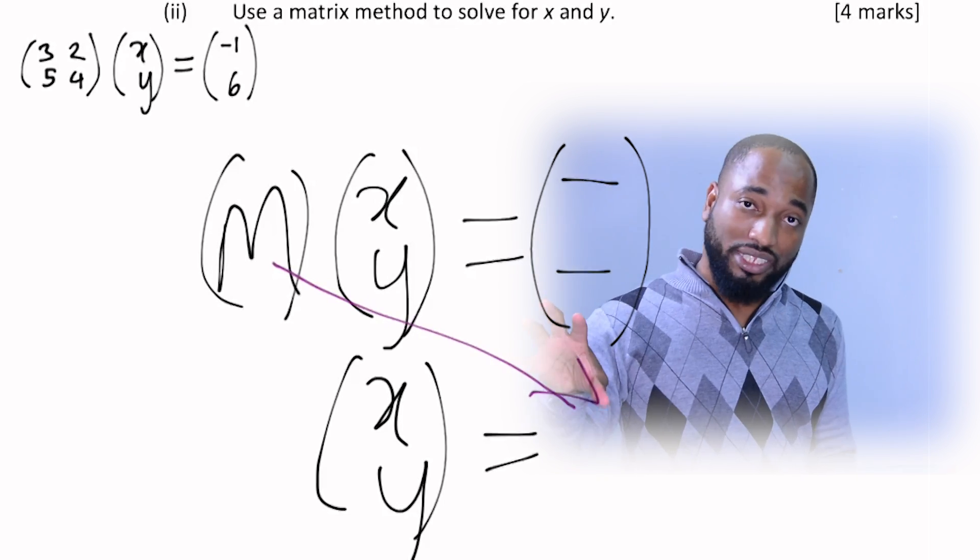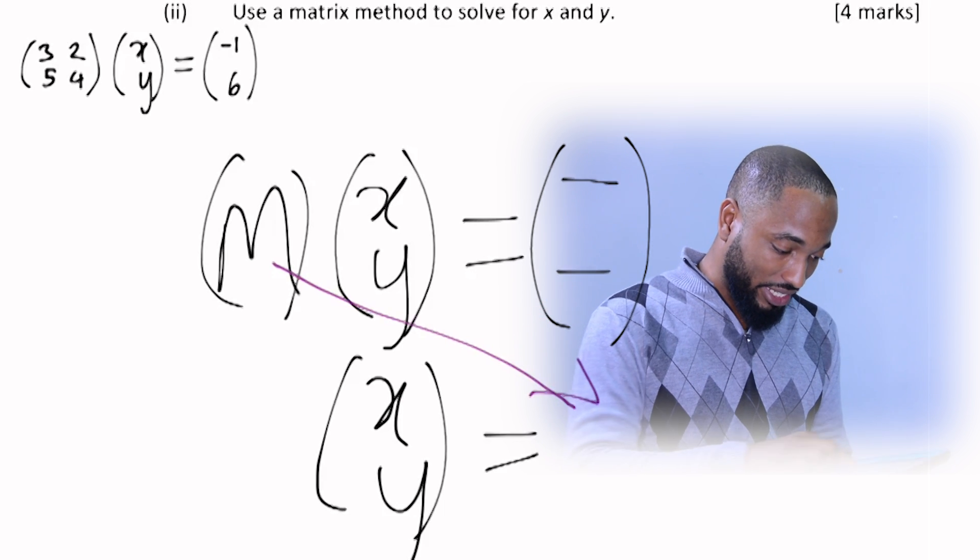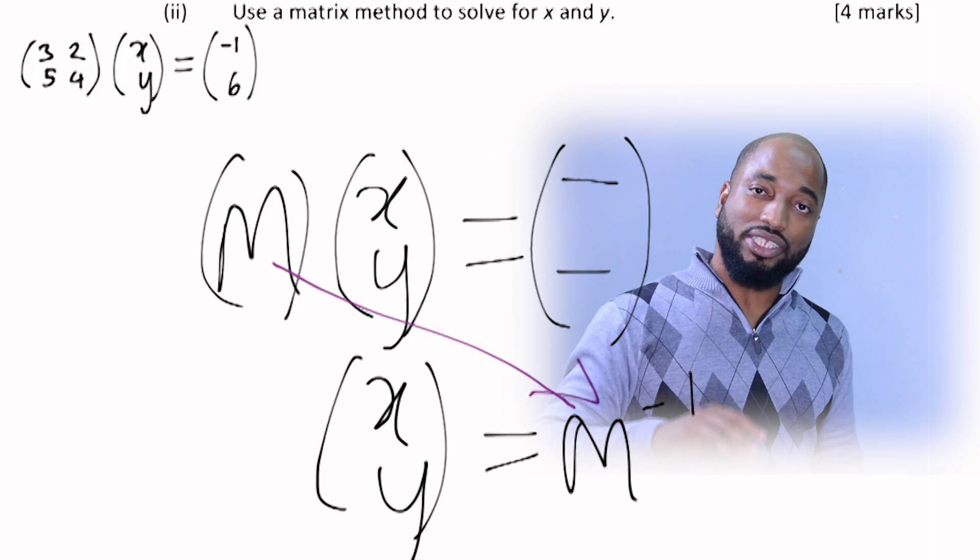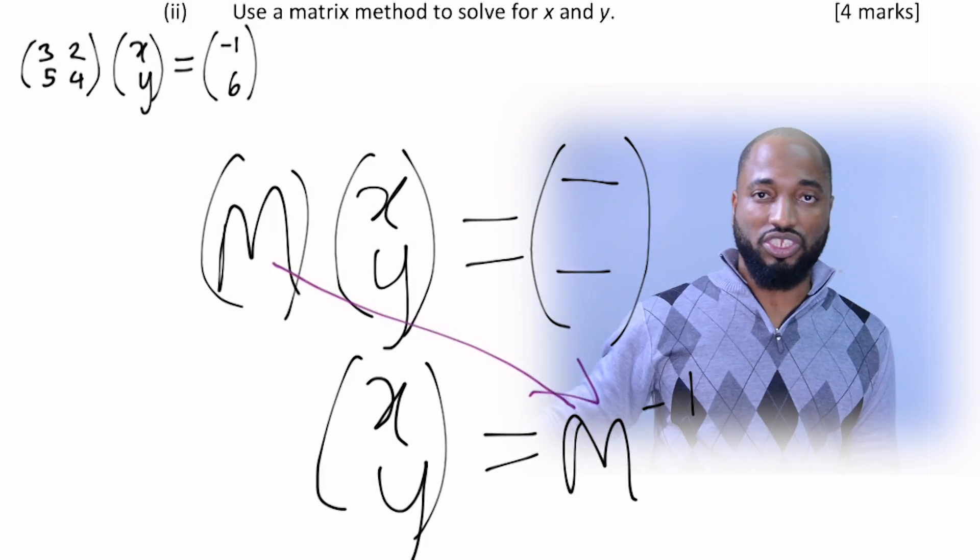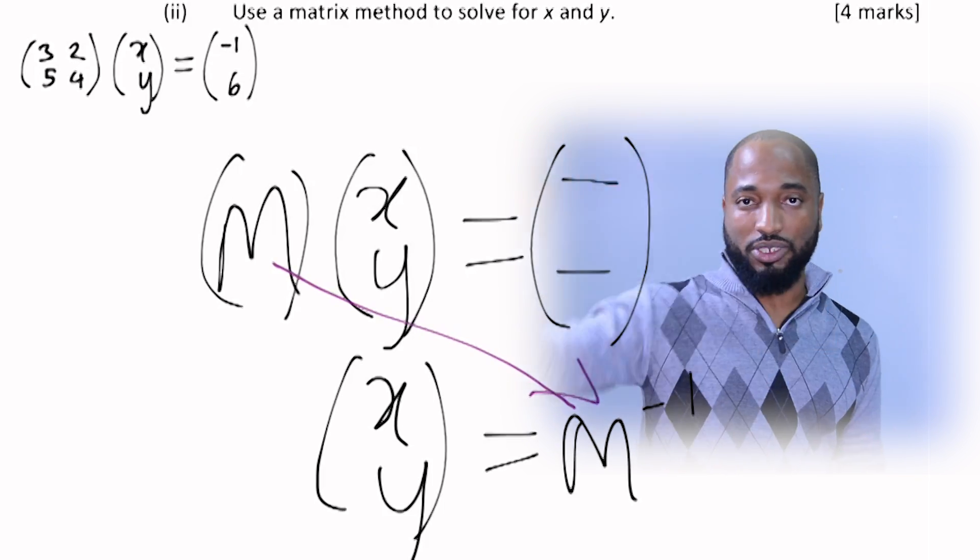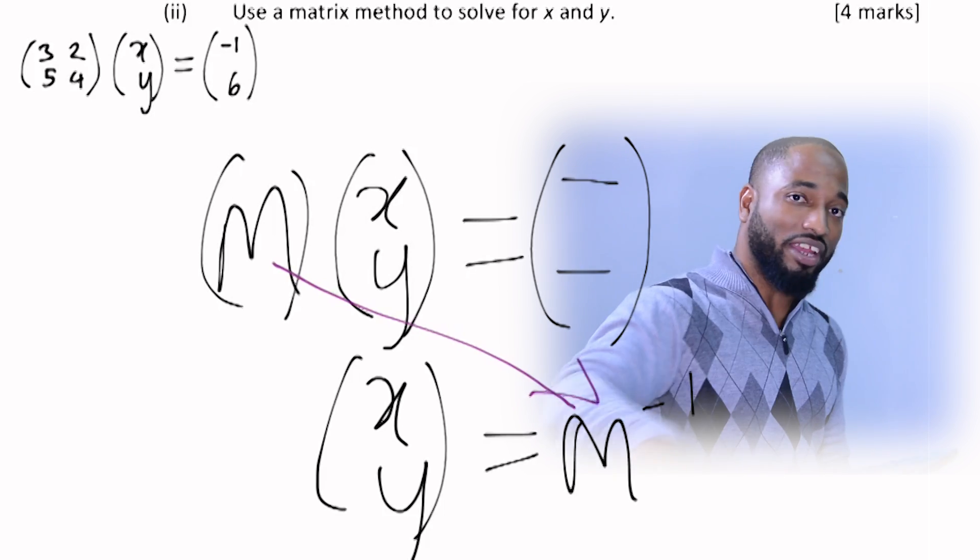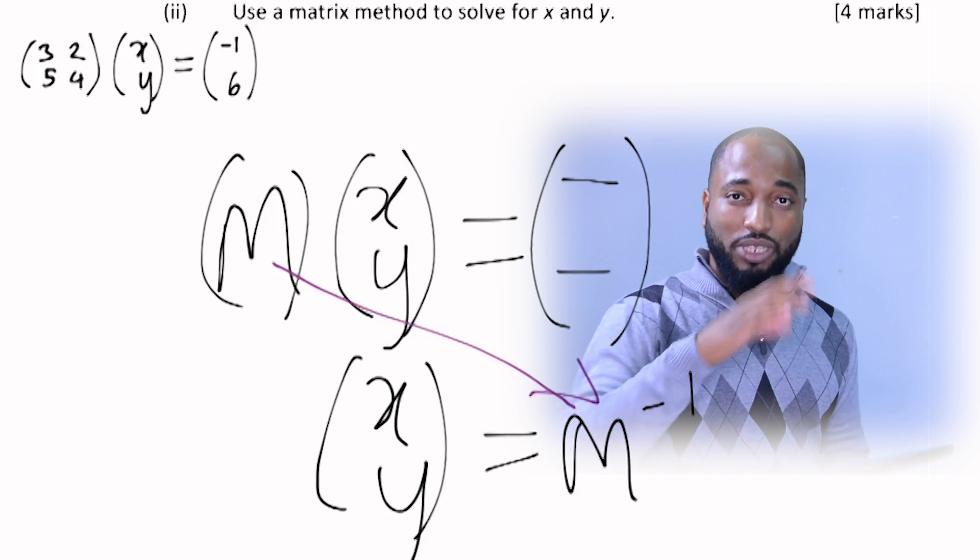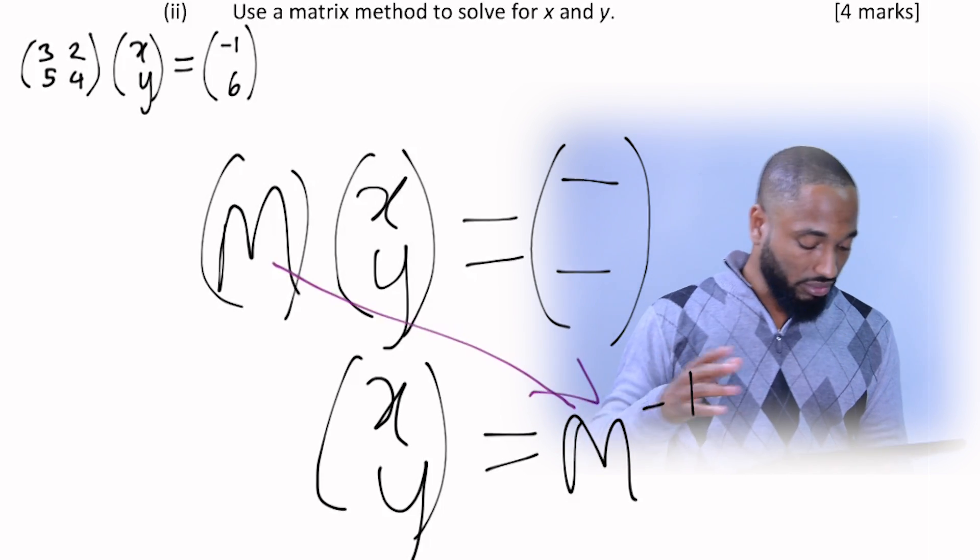So what happens to it is that it turns into the inverse. Because you can think of the equal sign as anything that goes across changes into the inverse. If I'm adding three and it comes across it turns into negative three. If I'm dividing by three and it comes across it turns into multiply by three. Once it comes across the equal sign, inverse.